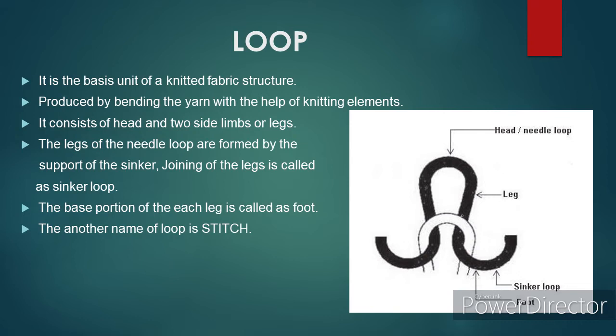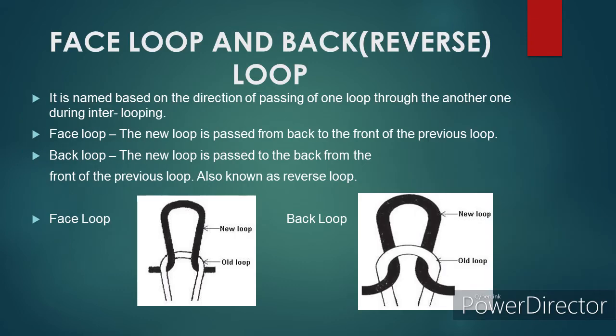The base portion of each leg is called foot. The other name of a loop is called stitch. A loop may be called as face loop or back loop, according to the direction of passing of one loop through another during inter-looping. You can refer to the below two images for the face loop and back loop. If a new loop passes from the back to the front of the previous loop made by the same needle during inter-looping, the loop is called a face loop. It is also known as knit stitch. Face loop tends to show the side limbs of the needle loop as a series of inter-fittings in the shape of V.